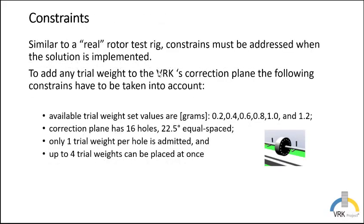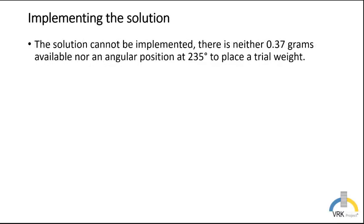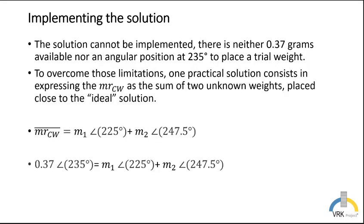In order to implement our solution, we have to comply with our constraints. So these are the available weights that we can use, and the correction plane has 16 holes 22.5 equal spaced. The solution cannot be implemented. There is neither 0.37 grams available, and there is no position in the plane of correction of 235 degrees to place at trail weight. To overcome those limitations, one practical solution consists in expressing our correction weight as a sum of two unknown weights placed close to the ideal solution that we calculated.